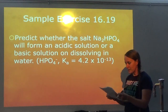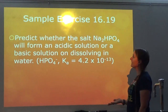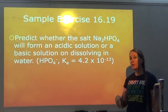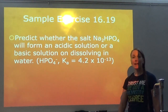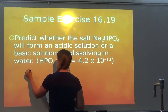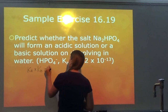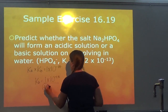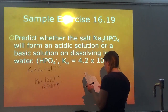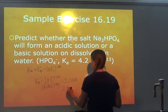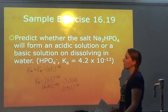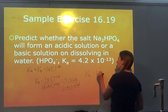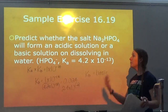Let's look at this one together. It says: predict whether the salt Na₂HPO₄ will form an acidic or basic solution on dissolving in water. It gave me the Ka. To handle an amphiprotic ion we compare Ka and Kb. They only gave me Ka, so I calculate Kb using Ka × Kb = 1×10⁻¹⁴. So Kb = (1×10⁻¹⁴) / (4.2×10⁻¹³) = 0.024, or 2.4×10⁻². Ka is 10⁻¹³ and Kb is 10⁻², so Kb is bigger — the solution is basic. If Ka had been bigger it would be acidic.